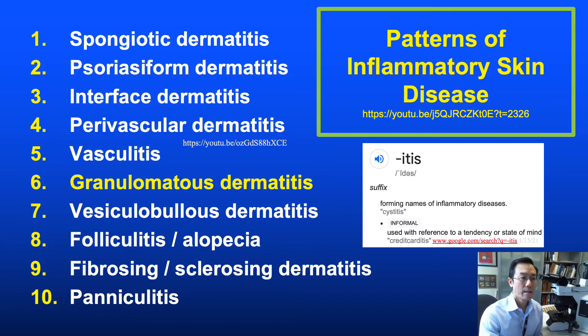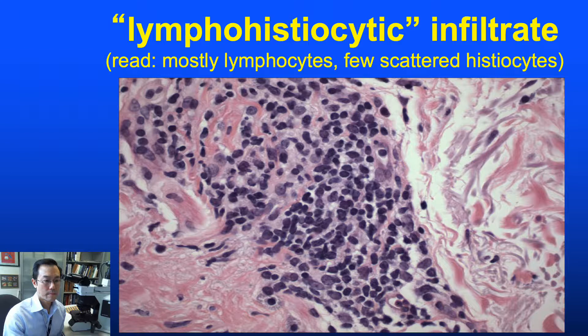Granulomatous dermatitis is one of the near-dozen classic patterns of inflammatory skin disease. Among the '-itises,' or specifically dermatitides, it's perhaps more authentic than others in the sense that it is truly a dermatitis with granulomatous changes and granulomas forming in the dermis. In contrast to spongiotic, psoriasiform, or interface patterns, the most distinctive changes are centered in the epidermis or dermal-epidermal junction. As discussed in my previous lecture on perivascular dermatitis, the least common denominator for inflammation in the dermis is perivascular lymphocytes.